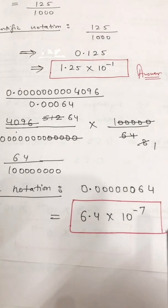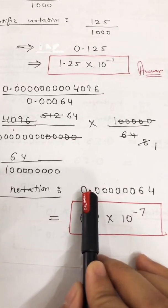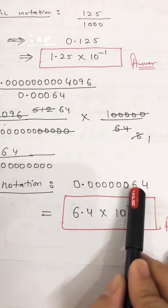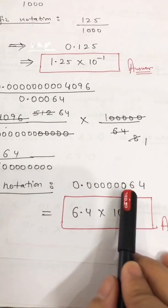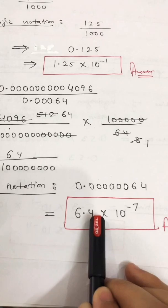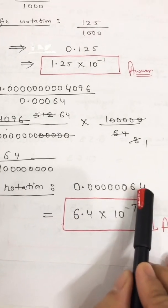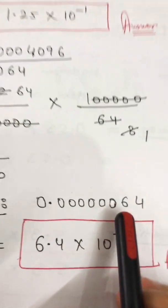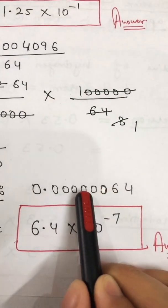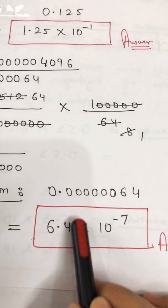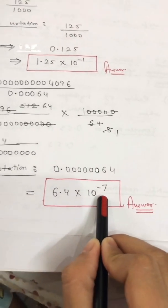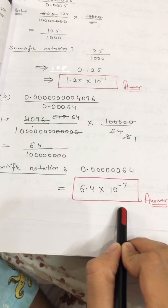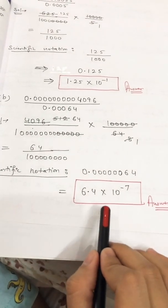Now converting to scientific notation: place the decimal after the first digit, so the first digit is 6 — giving 6.4. I have shifted the decimal — before 4, how many digits are there? One, two, three, four, five, six, seven. So multiply by 10 raised to power minus 7. This is your part b answer.